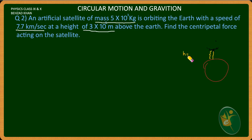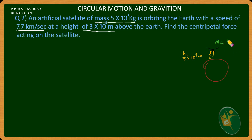We have the height h equal to 3 times 10 to the power 5 meters. We should recognize that the mass of the satellite is 5 into 10 to the power 3 kg.